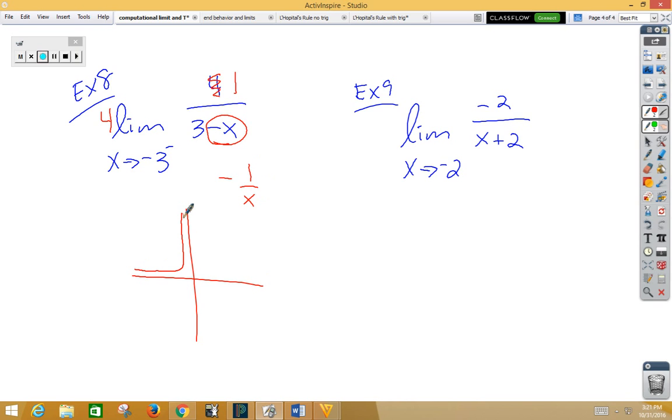Again, we're in quadrants 2 and 4, coming from the left side. So, as we come from the left side, we're heading this time towards positive infinity.